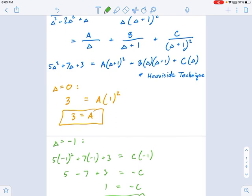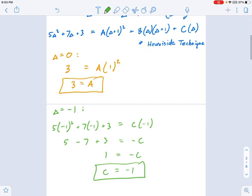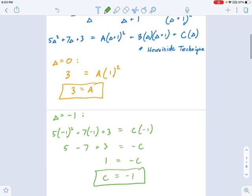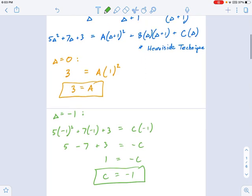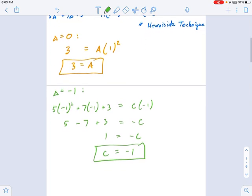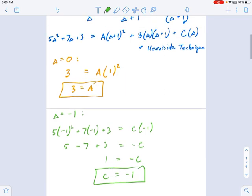That's another one of our solutions. Now we don't know B. There's only so far we can go with the Heaviside technique. In this case, we're going to have to choose another value for delta that's going to help us out with B, knowing what A and C are. Choose some value for delta. In this case, there's nothing super nice that's going to just make these things cancel out quickly. Let's just choose something that's not going to be too terrible.